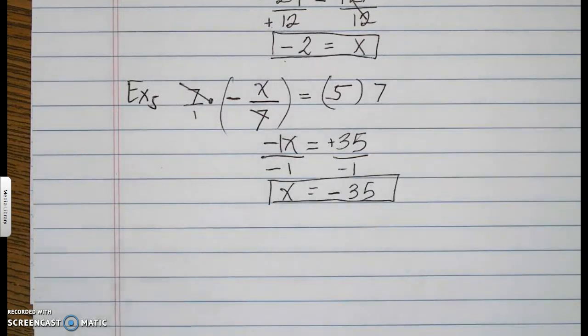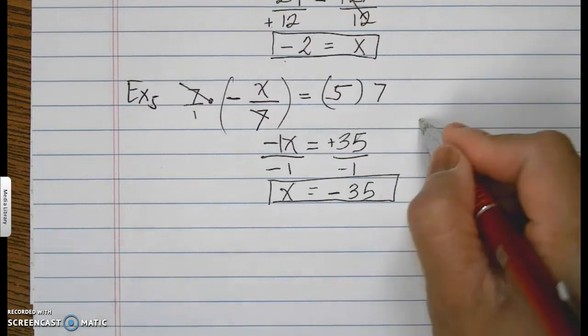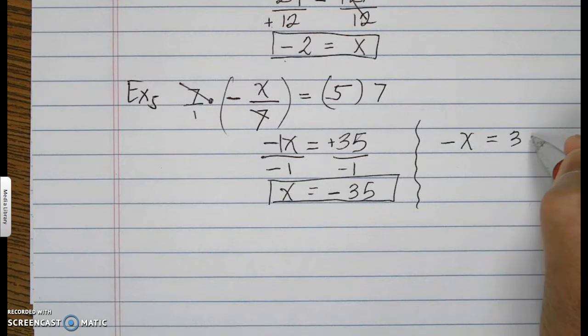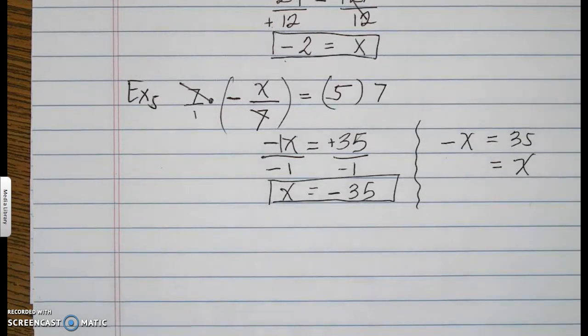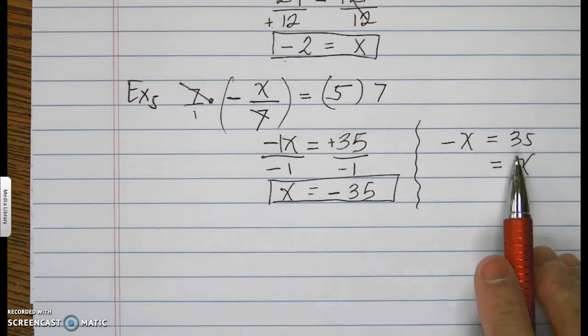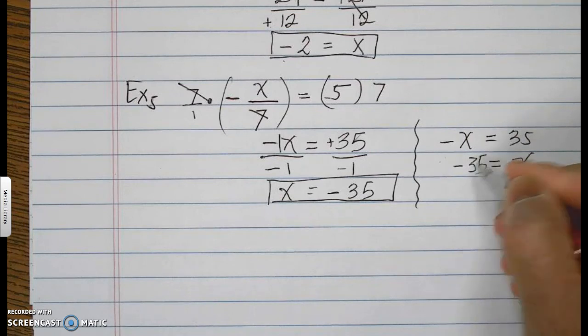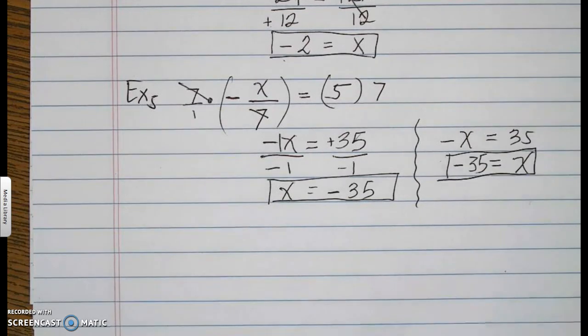The easier way is, what if you have negative x equals 35? Since that's a negative, I'll flip it here. It's now positive. And I need to flip this to the other side as well, making it negative 35. And it's the same. I'm going to flip it.